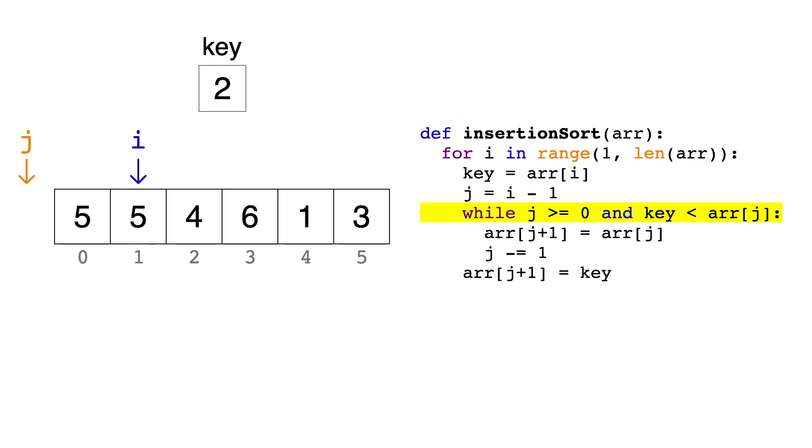We return to the top of the loop, but thankfully, because we checked that j must be greater than or equal to 0, we exit the loop and never try to access anything out of bounds. We then set the j plus 1th item equal to key. So set the item at index 0 equal to 2, and the first iteration is done.